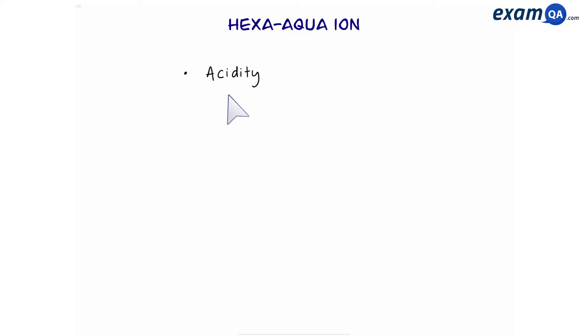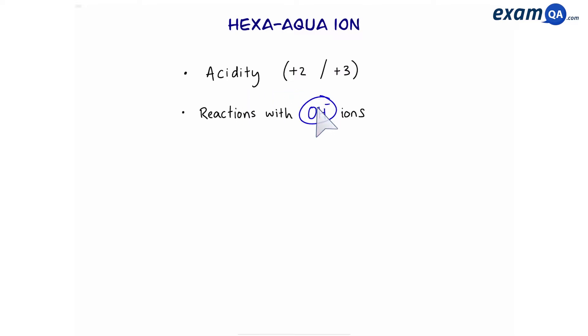In this chapter, we're going to learn about acidity of hexa aqua ions, comparing two plus and three plus ions, reactions with hydroxide, ammonia and carbonate ions.